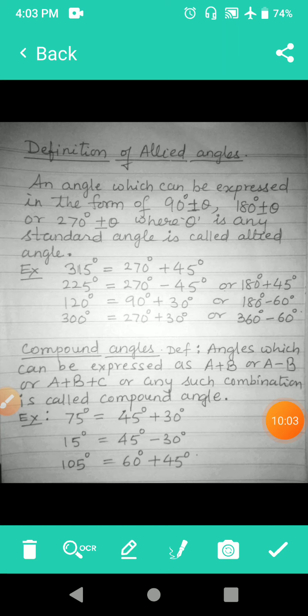Now we have a definition of allied angles. An angle which can be expressed in the form of 90 degrees ± θ, 180 degrees ± θ, or 270 degrees ± θ, where θ is any standard angle, is called an allied angle.